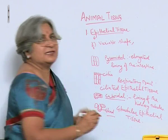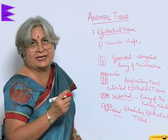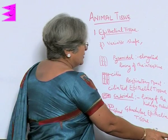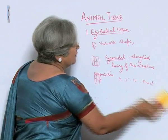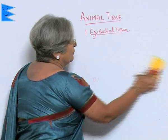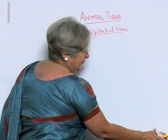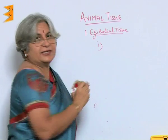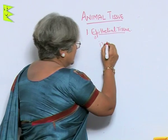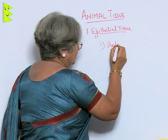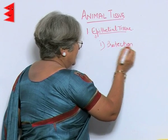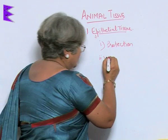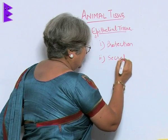Glands help in secretion, as in the case of salivary glands. To sum up, the functions of epithelial tissue are: the main function is protection, because it is a covering tissue. In the case of glandular epithelial tissue, it also secretes, so the second function is secretion.